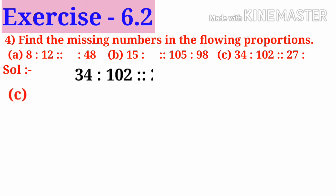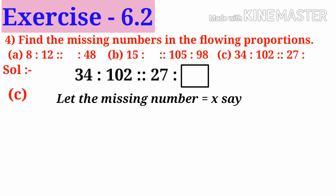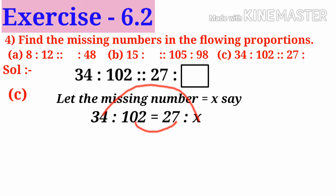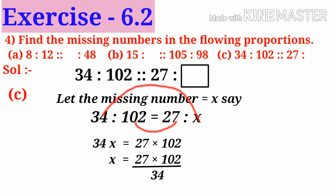Next C: 34 is to 102 is same as 27 is to box. Let the missing number be x. So 34 is to 102 is equal to 27 is to x. Both are in proportion, so product of extremes is equal to product of means. So 34 into x is equal to 27 into 102. So x is equal to 27 into 102 divided by 34. On simplification: 102 divided by 34 is 3, so 27 into 3 is 81. So the missing number is 81.